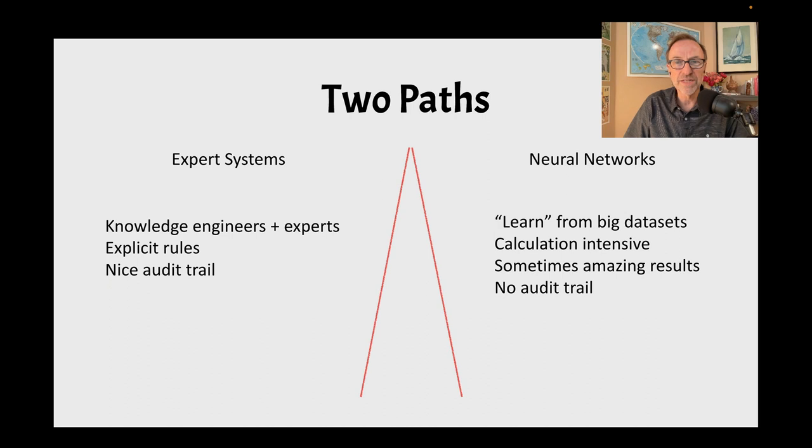Neural networks learn from large data sets. You feed them inputs and outputs, and then you say, with this input, what would the output look like? They're very calculation intensive, and occasionally gave amazing results, but they couldn't really leave an audit trail. It's not impossible to figure out what a neural network did, but it's incredibly difficult compared to expert systems.